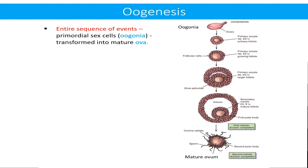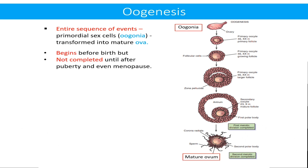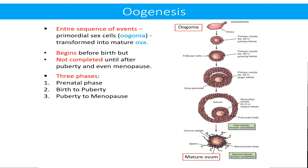Oogenesis is the entire sequence of events in which primordial sex cells, that is oogonia, are transformed into mature ova. It begins before birth but is not completed until after puberty, and it even extends into menopause. For practical purposes, it is divided into three phases: number one, the prenatal phase; number two, birth to puberty phase; number three, puberty to menopause phase.